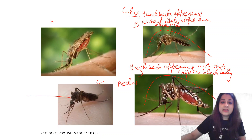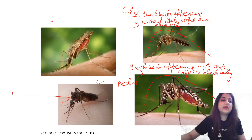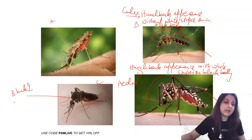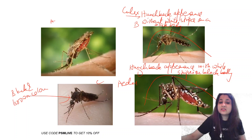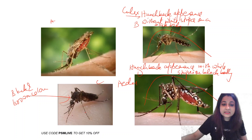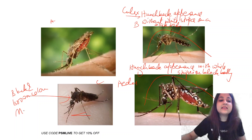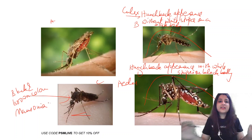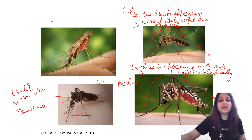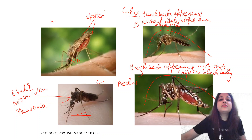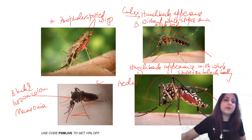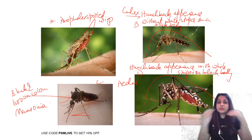If the mosquito is black or brown in color with white shiny bristles on the legs, that is Mansonia. And if none of these features are present — resting angle is 45 degrees with spotted wings — that is your Anopheles.